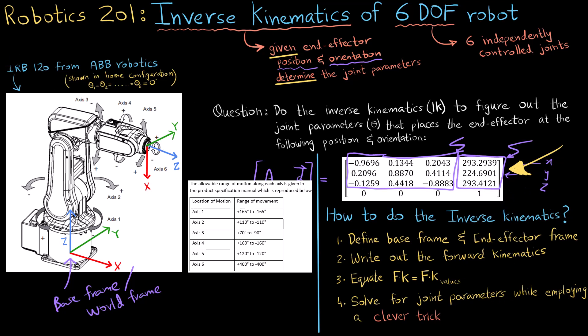And what would the joint parameters be in this case? The joint parameters would be my theta angles from theta1 all the way to theta6.